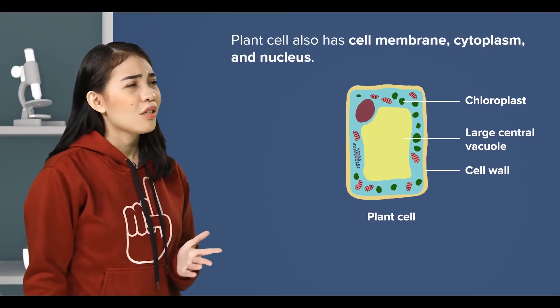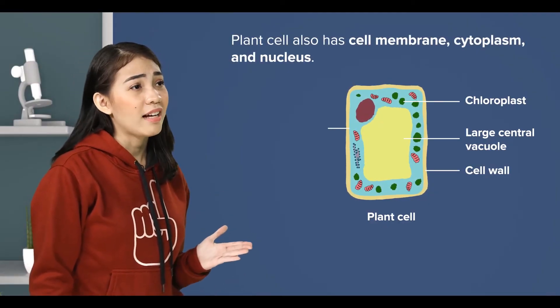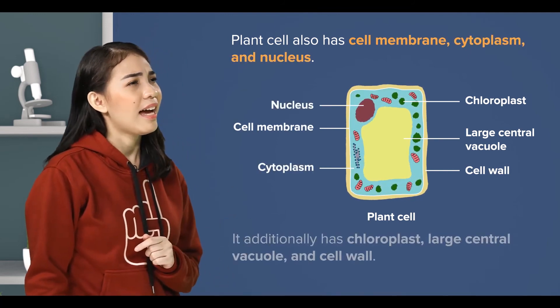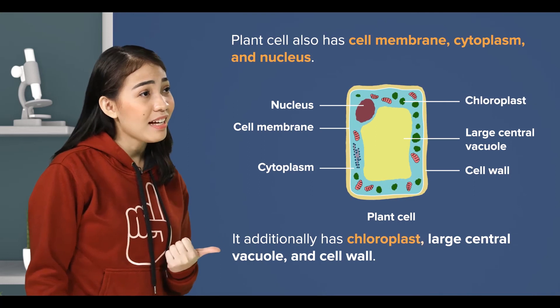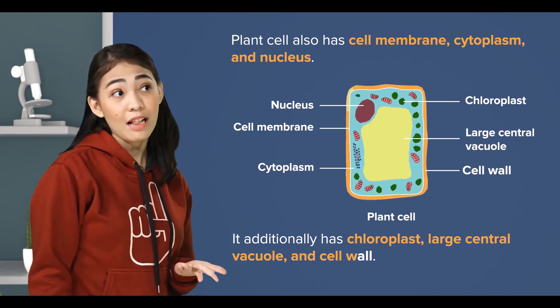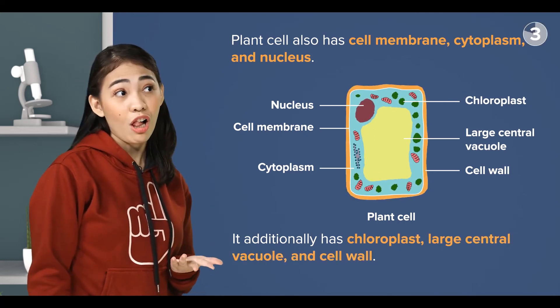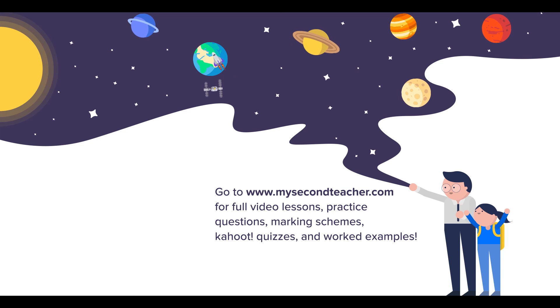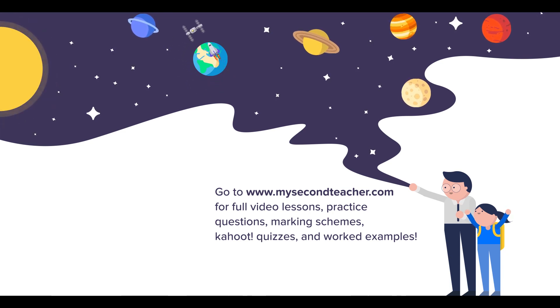So a plant cell also has a cell membrane, cytoplasm, and nucleus, and it additionally has chloroplasts, vacuole, and cell wall. That's right. Teacher, let's spot their presence in a plant cell diagram. Sure, I'm going to ask you in a minute.